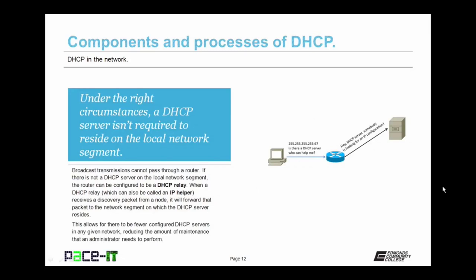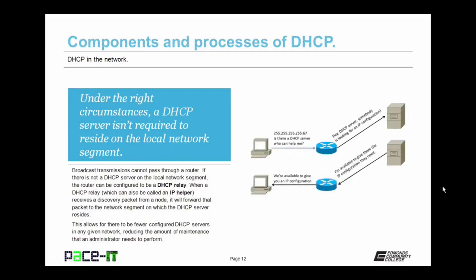Under the right circumstances, a DHCP server isn't required to reside on the local network segment. As a general rule, broadcast transmissions cannot pass through a router. But if there is not a DHCP server on the local network segment, the router can be configured to be a DHCP relay — also called an IP helper. When a DHCP relay receives a discovery packet from a node, it will forward that packet to the network segment on which the DHCP server resides. This allows for fewer DHCP servers in any given network, reducing the amount of maintenance an administrator needs to perform.